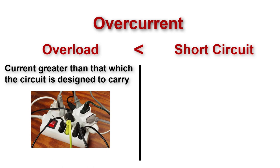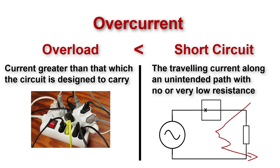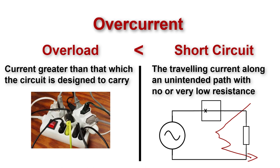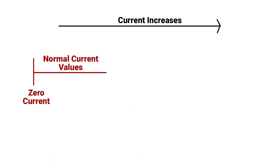Short-circuit current is the traveling current along an unintended path with no or very low resistance. So, in this chart, we have a normal current for an electrical equipment until we reach to the maximum normal current value, or full-load current.